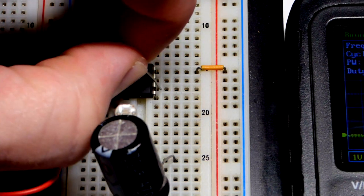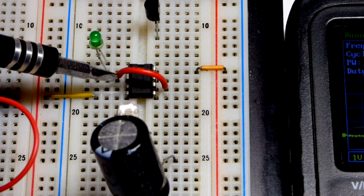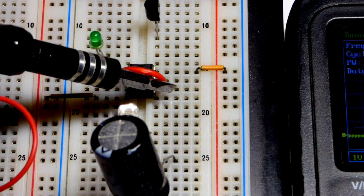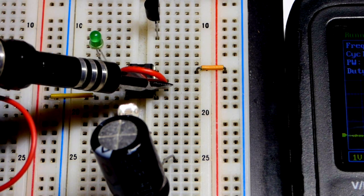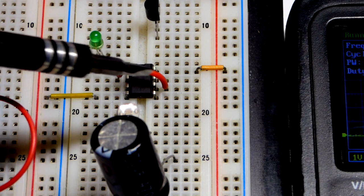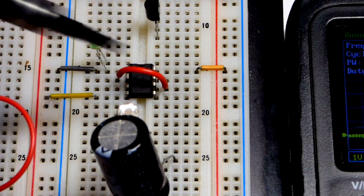When we get to one-third of the power supply voltage, that is when the trigger pin is going to react. When we get to two-thirds of the power supply voltage, that is when the threshold pin is going to act.